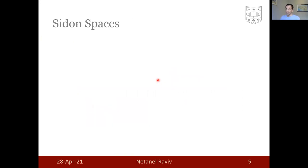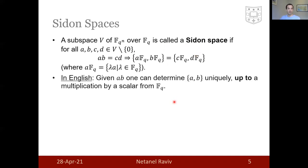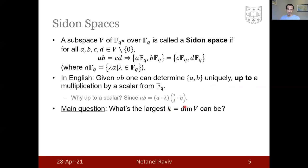Without further ado, a Sidon space is a subspace of the extension field over the base field, such that, take any two pairs of elements and multiply them. If you get the same result of the multiplication, then these pairs must be identical, up to a constant multiple from the base field. In other words, given the product, one can determine the elements uniquely, up to a multiplication by a scalar. Where is the scalar coming from? Since you can always squeeze any scalar lambda non-zero from the base field here and still get the same product. A similar question, what is the largest k, which is the dimension of the Sidon space, with respect to n, of a subspace that has this property? Similar counting arguments show that n has to be at least 2k, give or take.